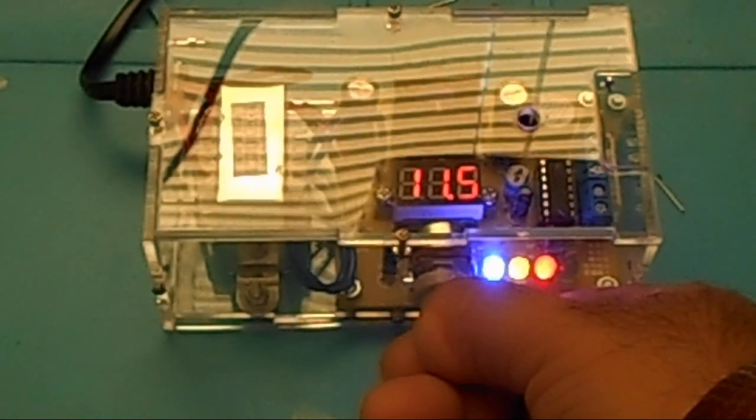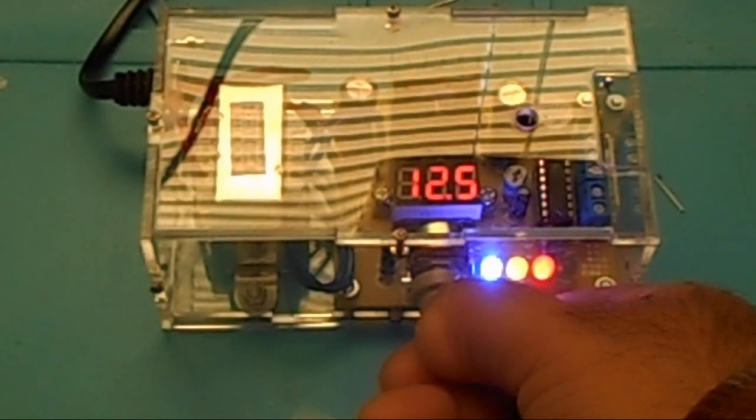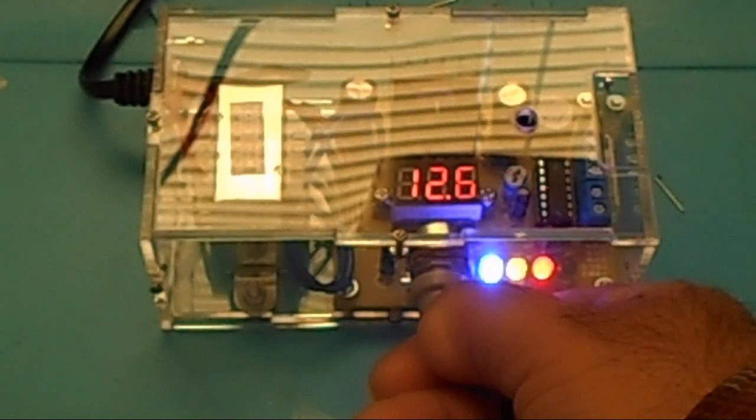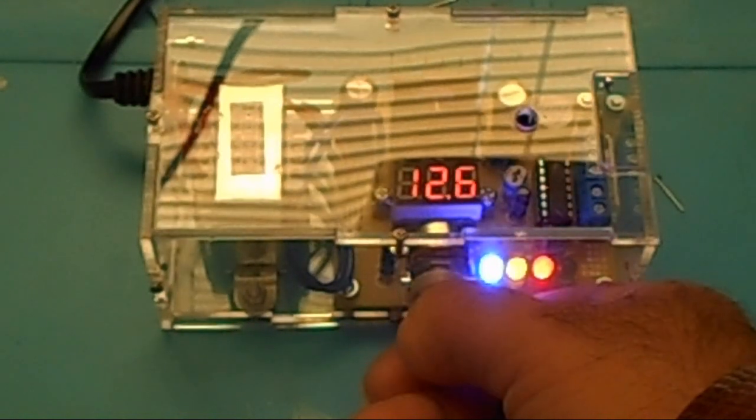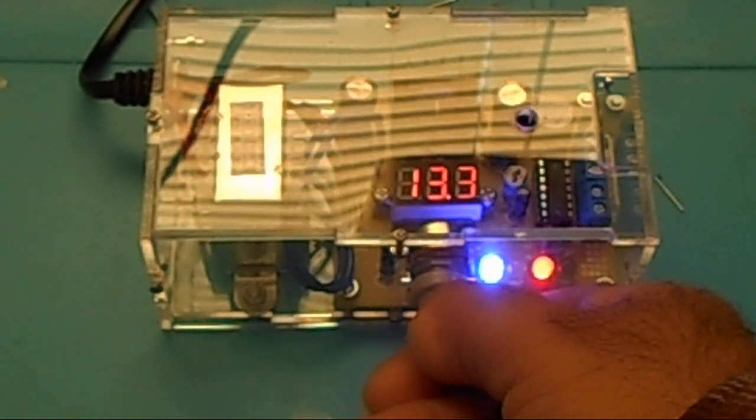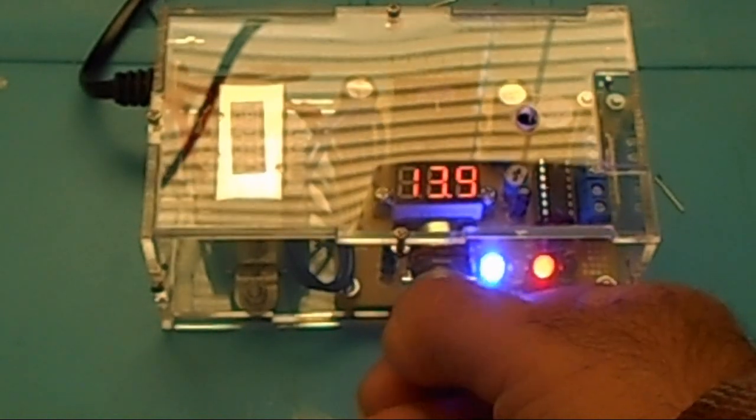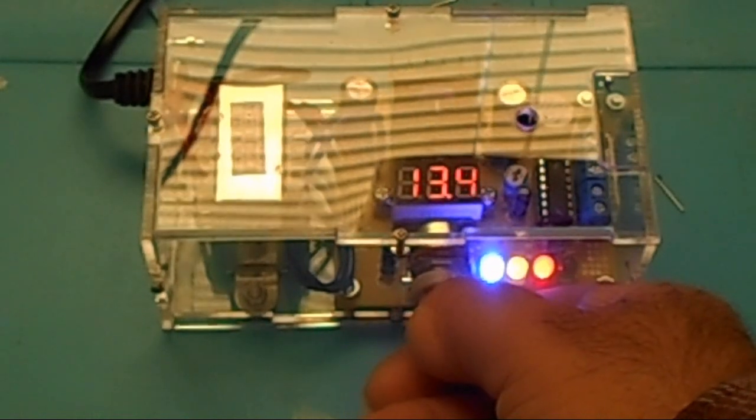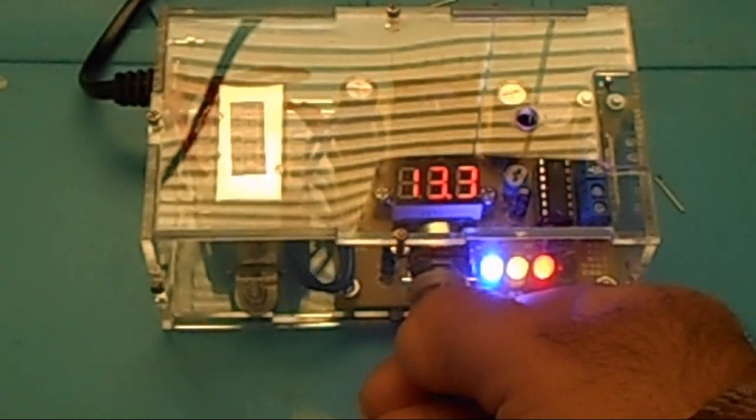There's 10, 11, 12, 13, and it's jumping back and forth between 13, 13.1, 2, 13.7, it's kind of jumping all over the place.